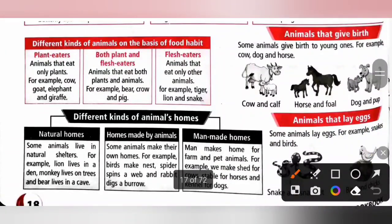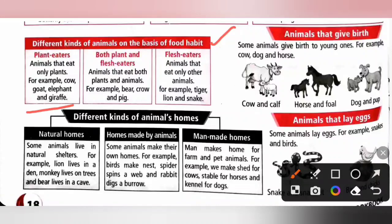Different kinds of animals on the basis of food habit. Plant eaters: animals that eat only plants, for example cow, goat, elephant, and giraffe. Plant-eating animals are also known as herbivores.